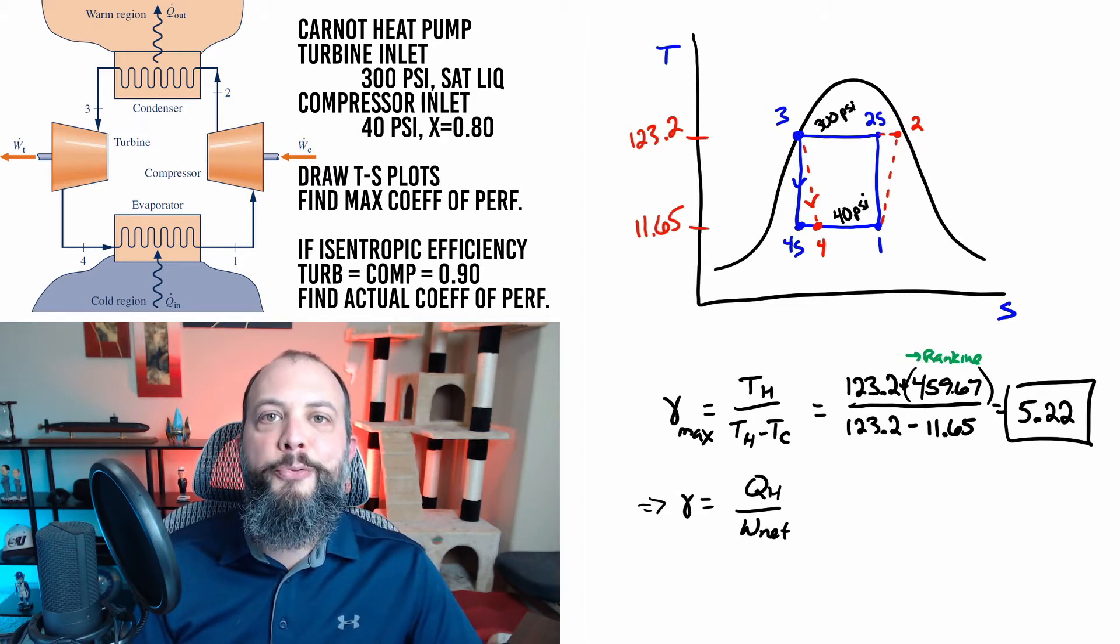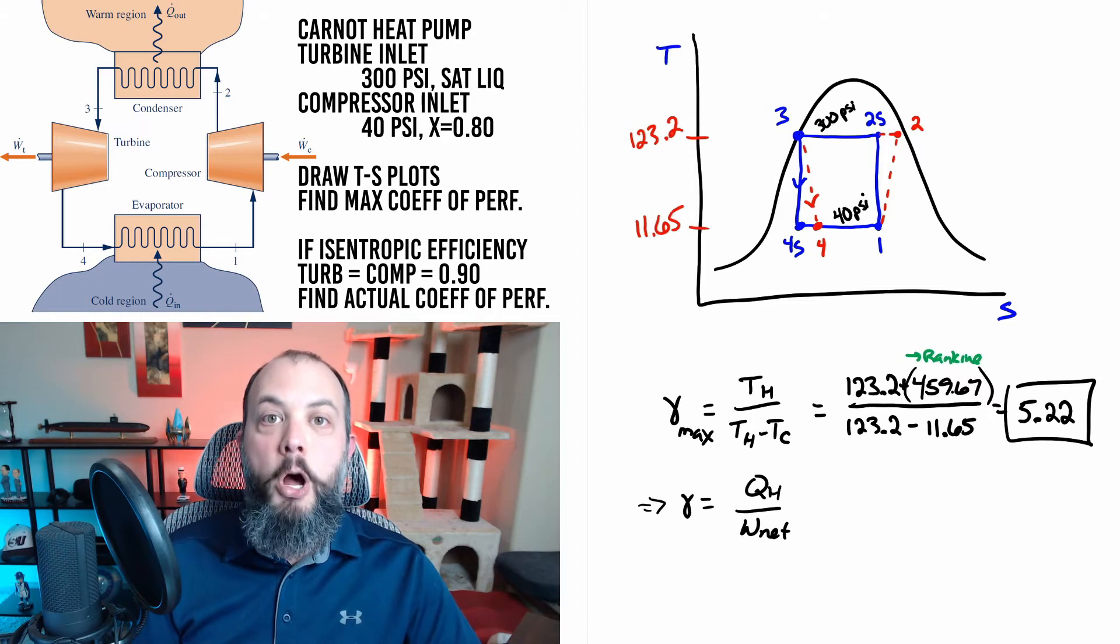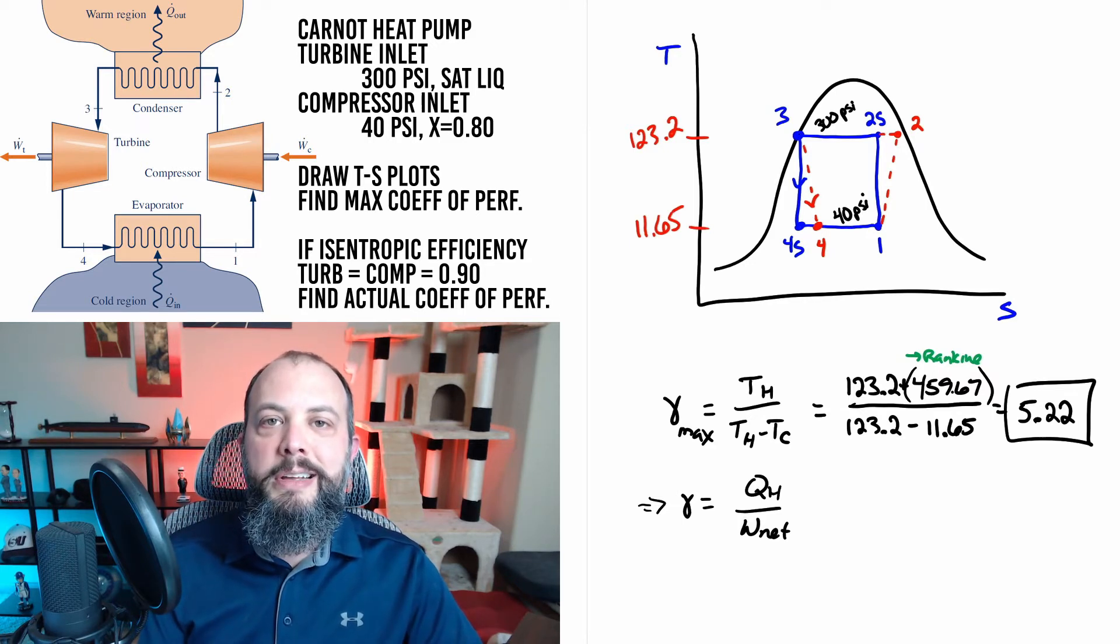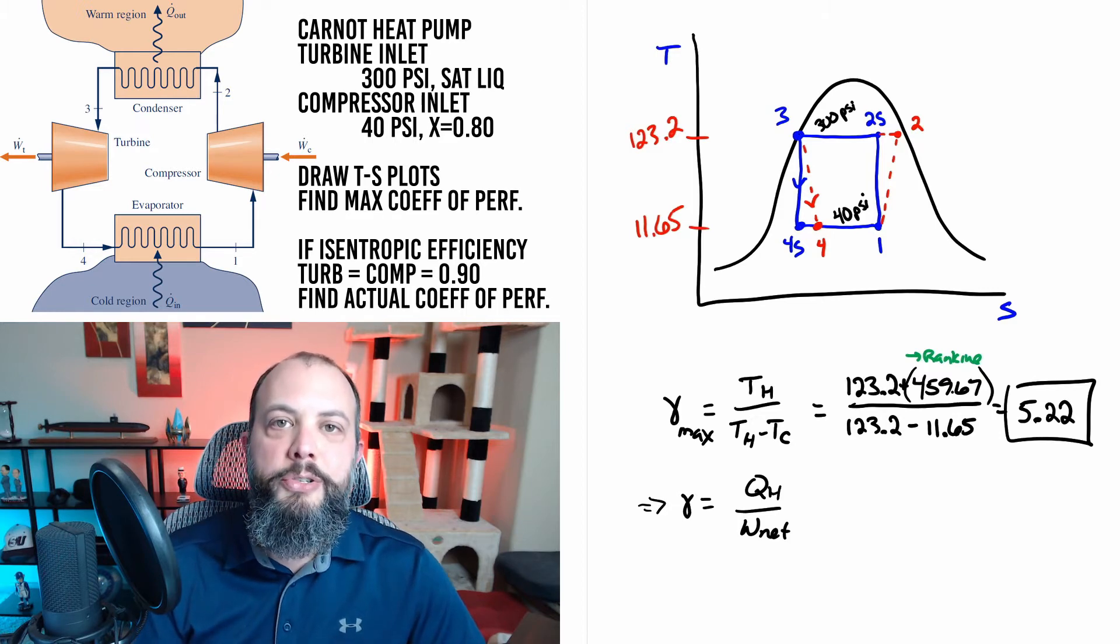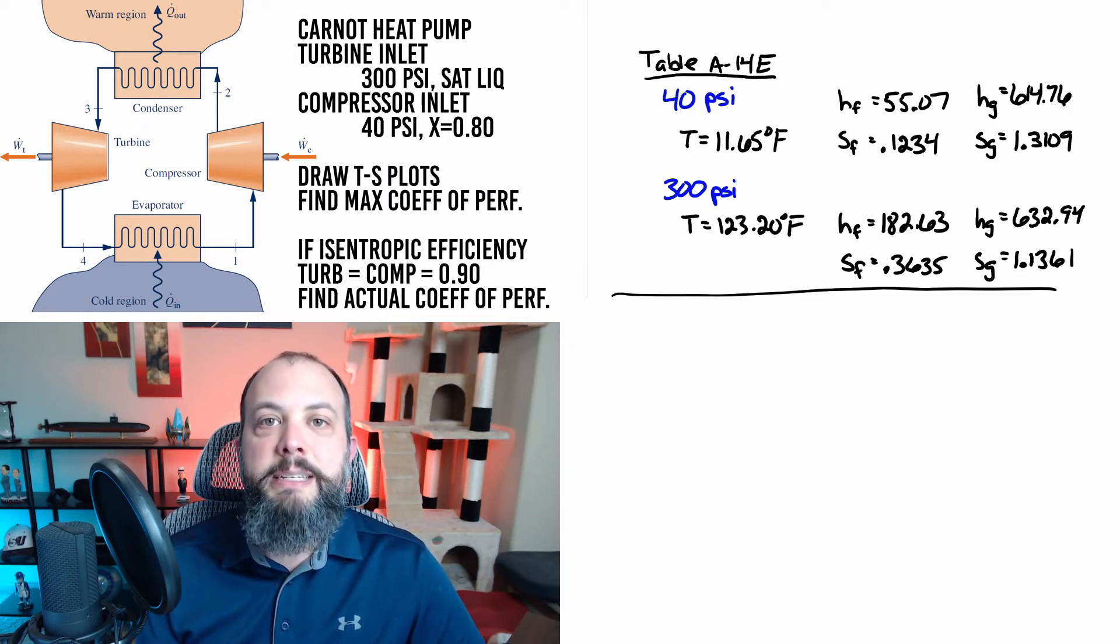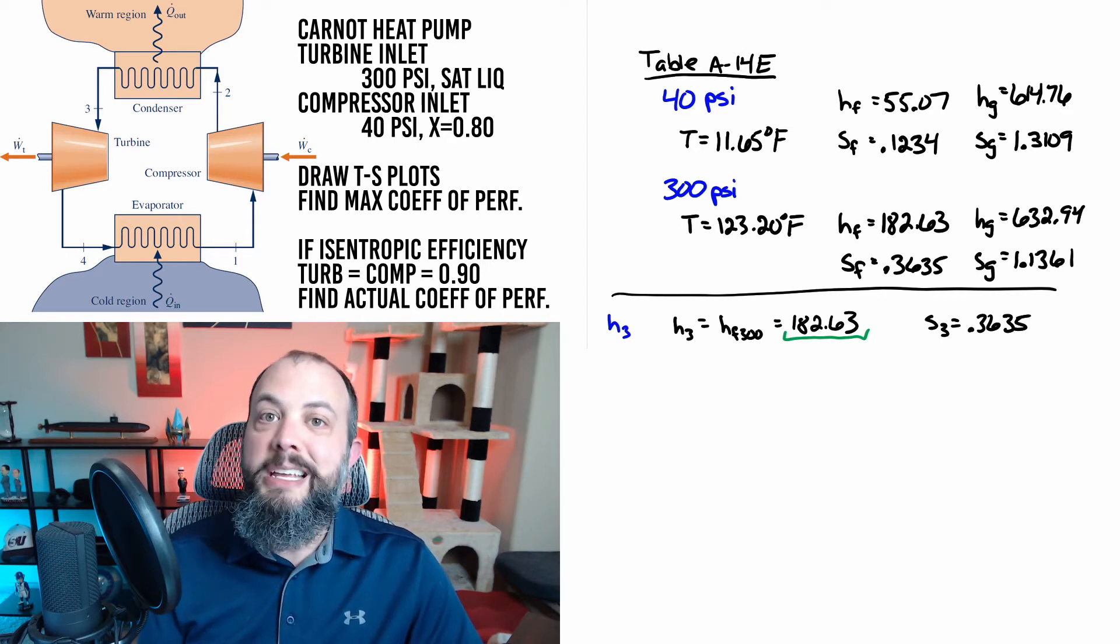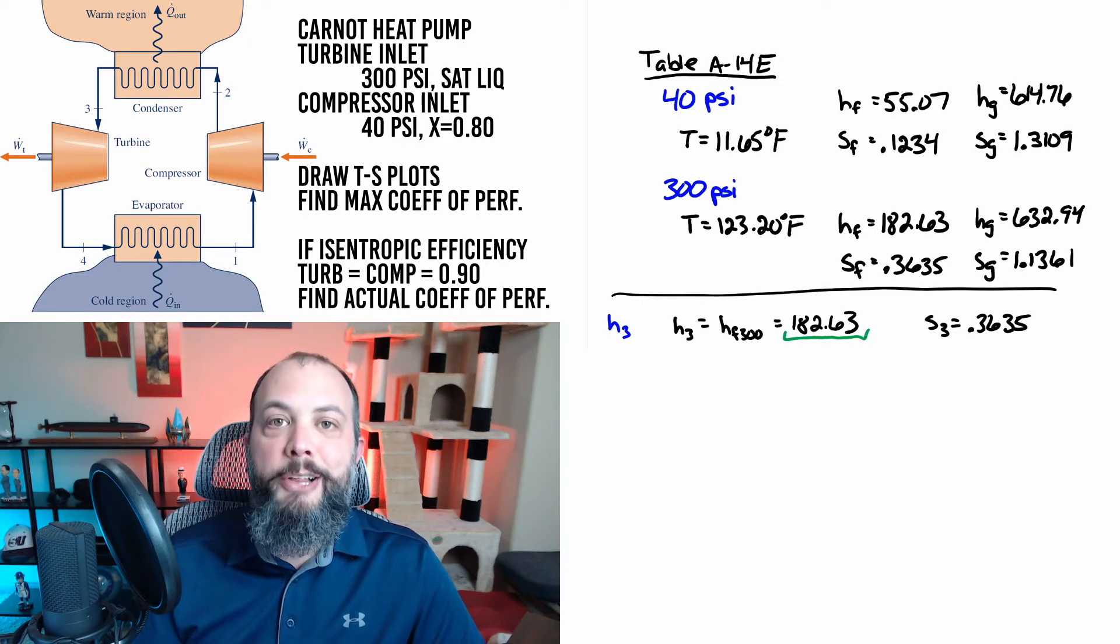So back to the other final answer we're looking for coefficient of performance after taking into account isentropic efficiencies for the compressor and turbine. We're going to need to find all of the enthalpies H1 through 4. So we're going to start off by finding the Carnot enthalpies points 1, 2s, 3 and 4s and then after that we'll use the isentropic efficiencies to find enthalpies of points 2 and 4. So first off I'm just keeping myself organized by writing down all of those numbers that I found in the steam tables and then I'm going to start at point 3 because that's the easiest one.